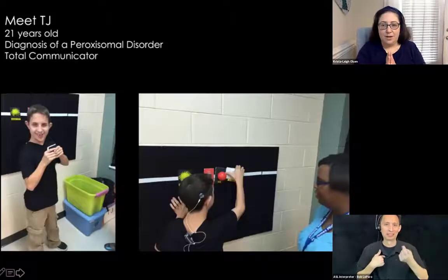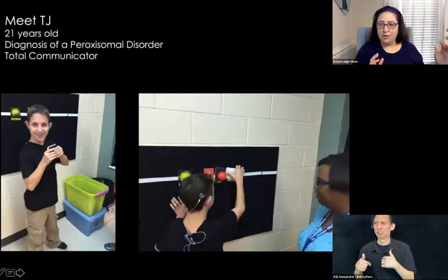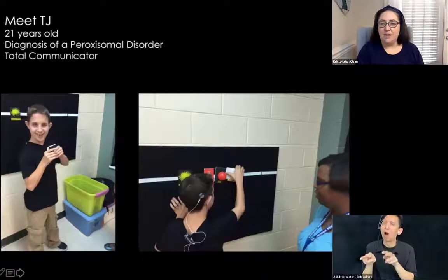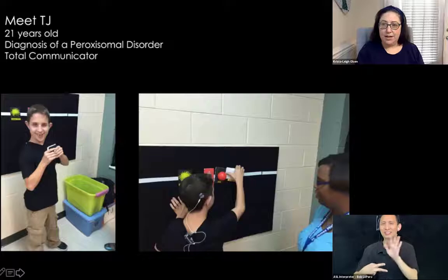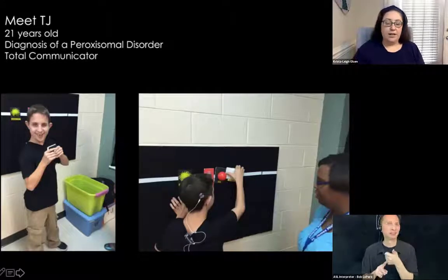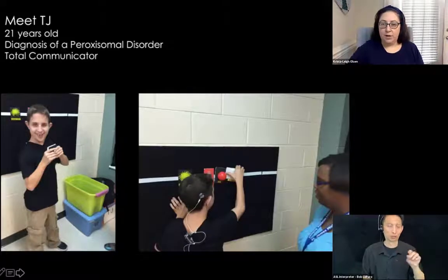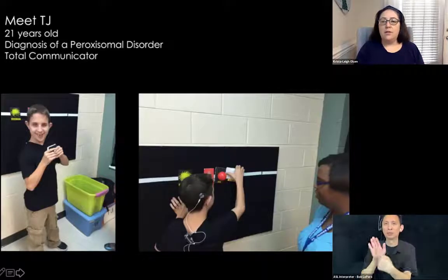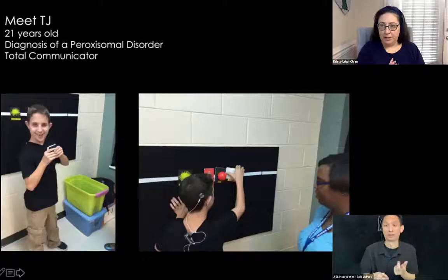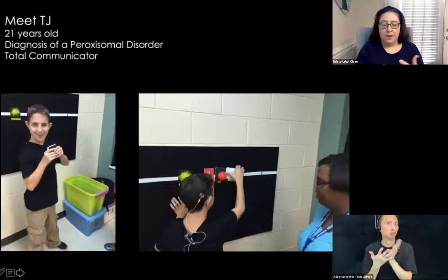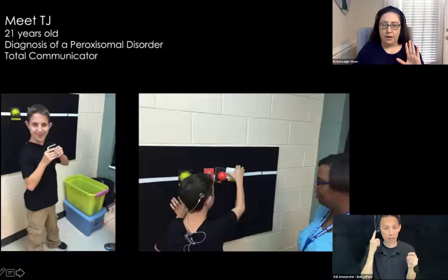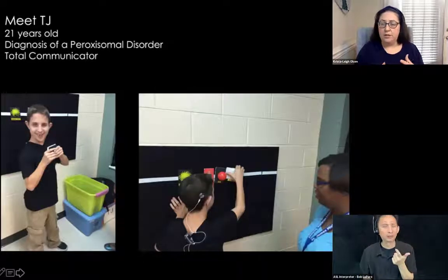I wanted to give you two examples of students in action. You may recognize TJ from his mom's presentation last week. He just turned 21 and has a diagnosis of a paroxysmal disorder. He is what I would call a total communicator — he takes in information receptively using auditory input, tactile sign, a little bit of vision and visual cues. Expressively, he has some verbalization, home signs and tactile signs, and uses object cards. He has a cochlear implant on one side and a hearing aid on the other with degenerative loss over time, and his vision is much like retinitis pigmentosa in terms of field loss and light sensitivity.